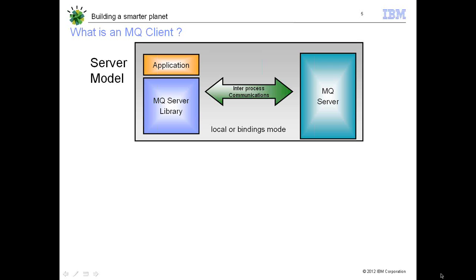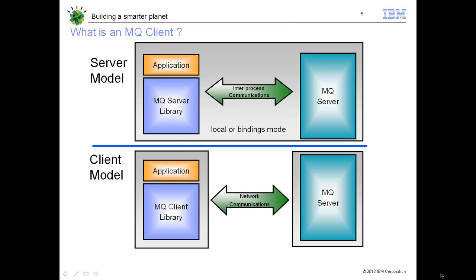We have two models. One is a server model where the client and the queue manager exist on the same computer, and communication happens via inter-process communication, which is faster and performance-oriented. We call this the local or bindings mode of connection. The other model is the client model where the MQ queue manager is on a remote computer and the client is elsewhere. The client establishes a connection channel with the queue manager for sending and receiving data. This is called the client model.